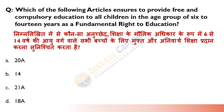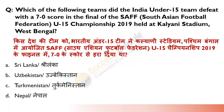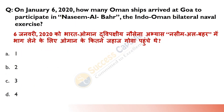Which of the following articles ensures free and compulsory education to all children in the age group of 6 to 14 as a fundamental right? Answer is C — Article 21A. Which of the following teams did India Under-15 defeat with a 7-0 score in the final of the South Asian Football Federation held at Kalyani Stadium in West Bengal? Answer is D — Nepal.